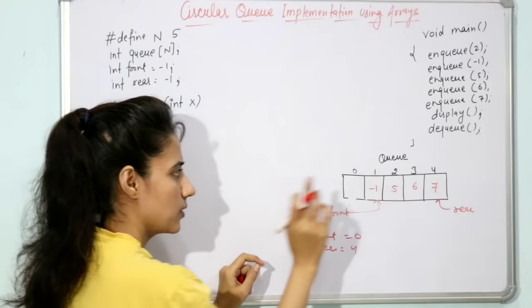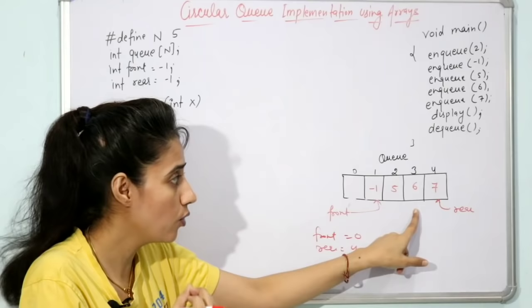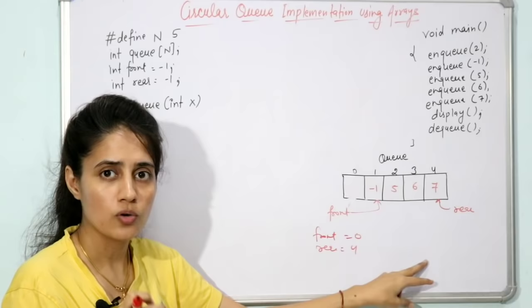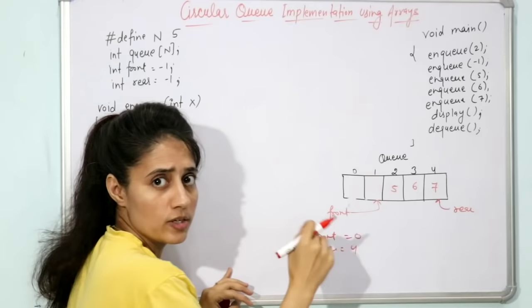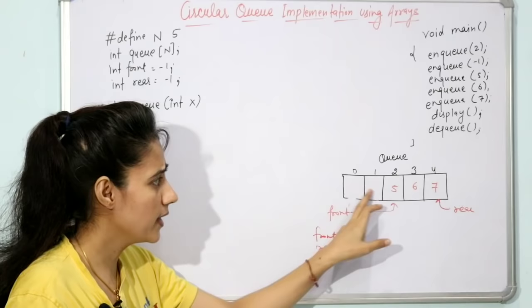We don't care about the garbage value since we can override it. But if we call enqueue again, it still shows 'queue is full' because the condition is rear equals n minus 1. Even if we dequeue once more, it still says full — yet we have available space. This inability to use freed space is the major drawback of the linear queue.